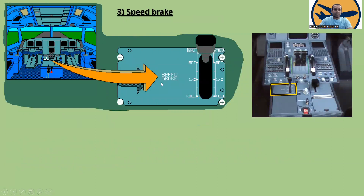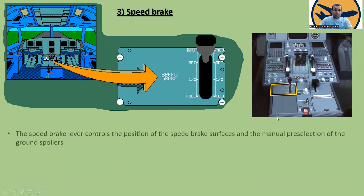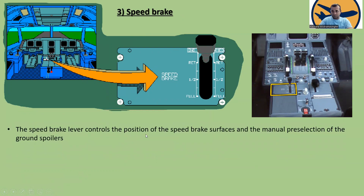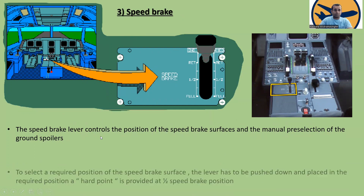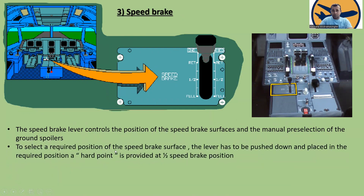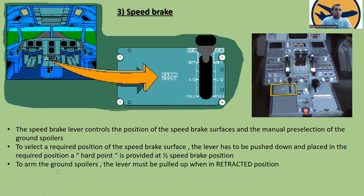The speed brake lever controls the position of the speed brake surfaces and the manual pre-selection of the ground spoilers. To select a required position, the lever has to be pushed down and placed in the required position. A hard point is provided at half speed brake position. To arm the ground spoilers, the lever must be pulled up when in the retracted position.